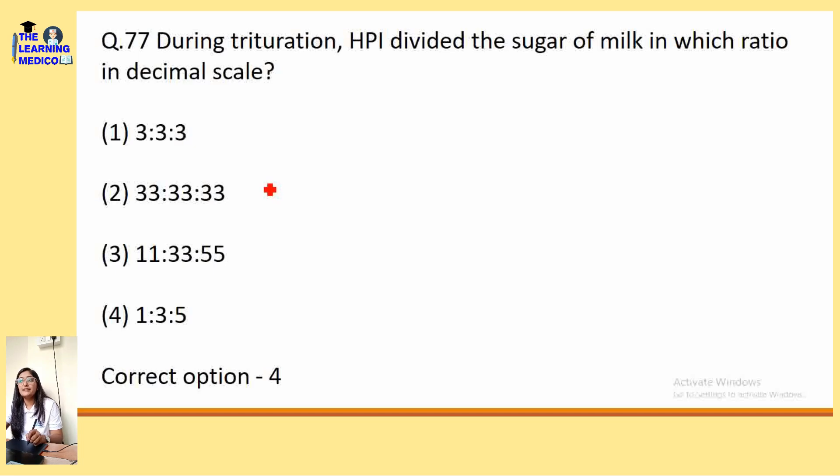During trituration, HP divided the sugar of milk in the ratio of 1:3:5.